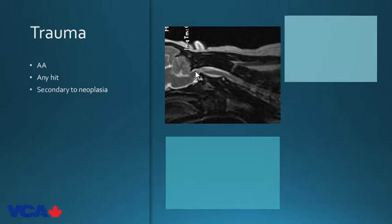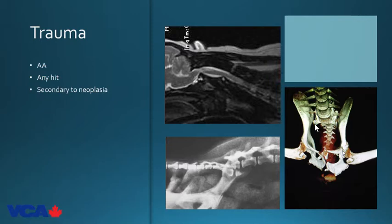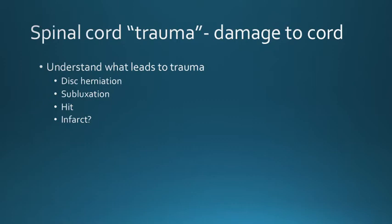Trauma cases: an atlantoaxial subluxation shows tremendous pinching at the atlantoaxial junction. Another patient had a severe hit-by-car with overriding fractured vertebrae. A third had sacroiliac luxation with pelvic fractures — a domain shared between neurosurgeons and surgeons requiring prompt management. Proper neurological exam is essential not only for assessing current status but also for monitoring recovery, since moving unstable bones can cause as much damage to nerve roots and spinal cord as the original trauma.